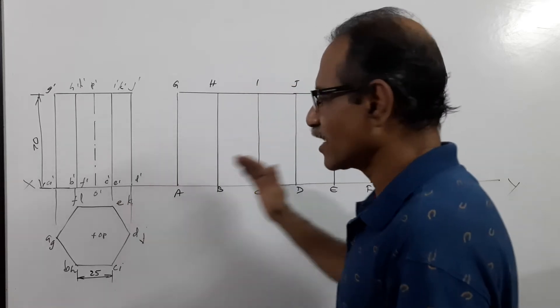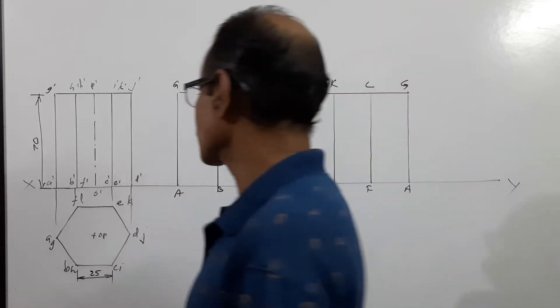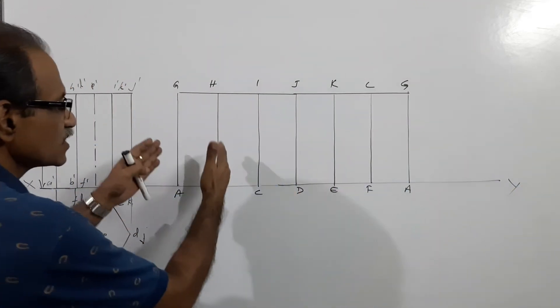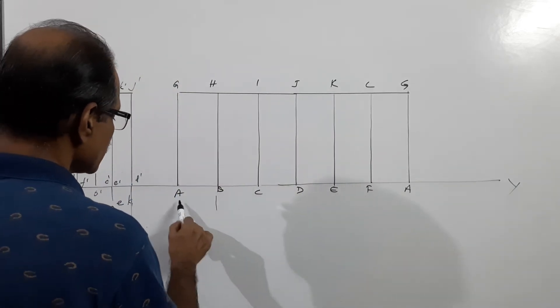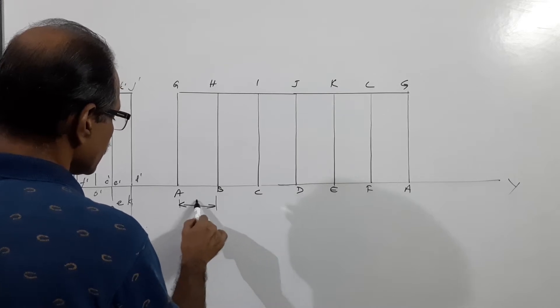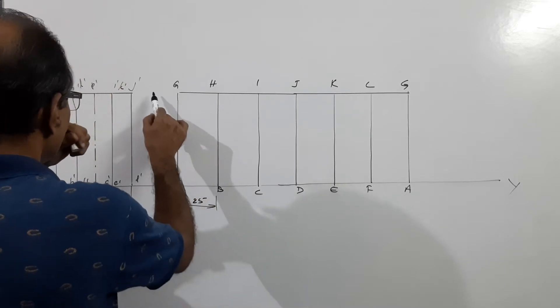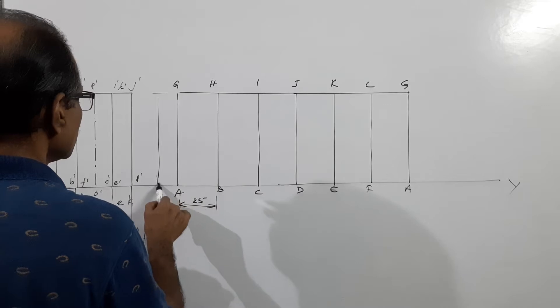I have drawn the plan and elevation of the hexagonal prism with a side of base parallel to XY line and the development of the lateral surface. The lateral surface has six rectangles, this height is 70 mm.